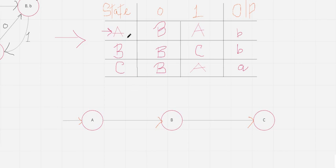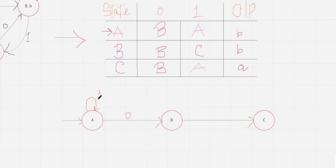I have made three states and interconnected them. From state A on seeing zero, it goes to state B — I make a zero-labeled transition there. State A on seeing one goes to itself, so I make a self-loop labeled one. Next, state B on seeing zero goes to itself, so a self-loop labeled zero. State B on seeing one goes to state C — that transition is labeled one.